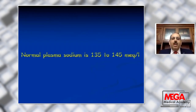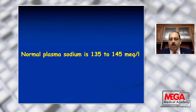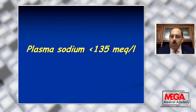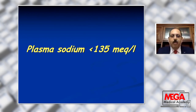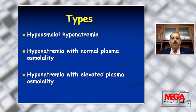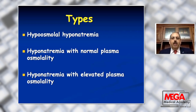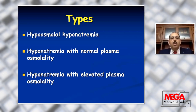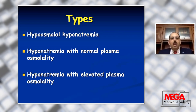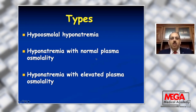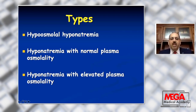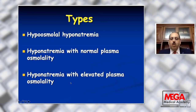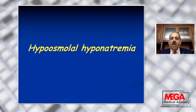The normal plasma sodium is 135 to 145 milliequivalent per liter. Hyponatremia means plasma sodium below 135 milliequivalent per liter. The types of hyponatremia include true hyponatremia, when sodium level is below normal so the osmolality will be lowered also. Under certain conditions, hyponatremia may be associated with normal plasma osmolality or even elevated plasma osmolality, and these two conditions are called pseudohyponatremia or false hyponatremia.